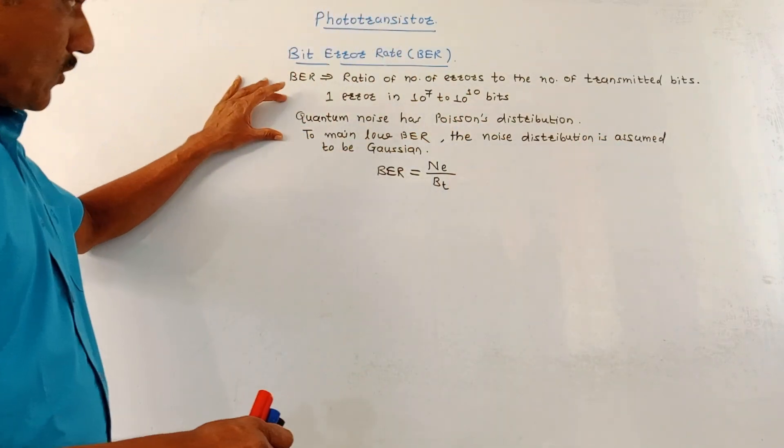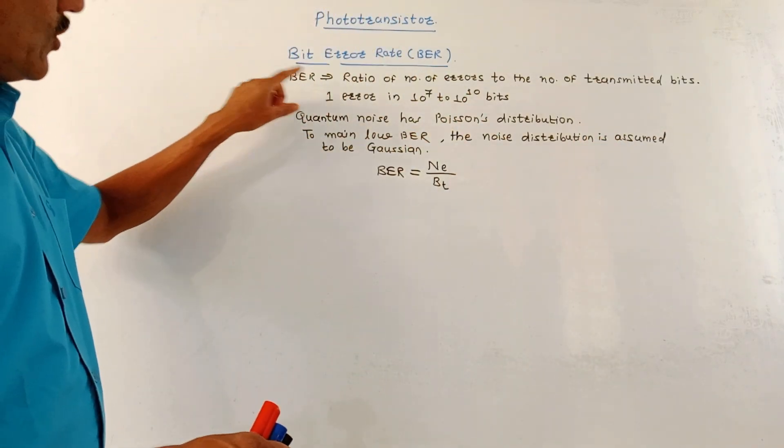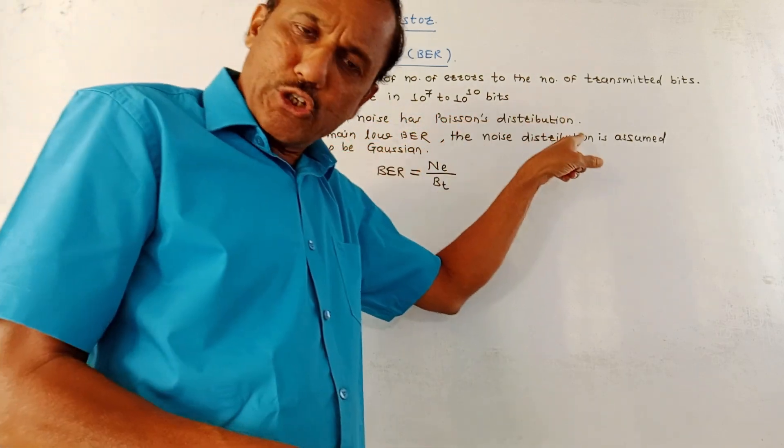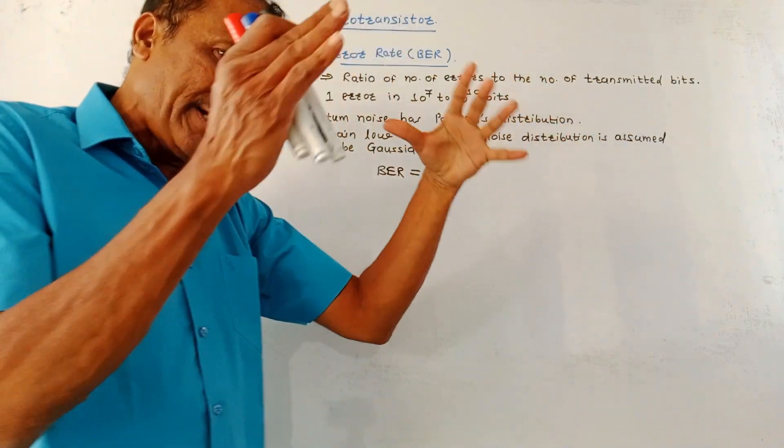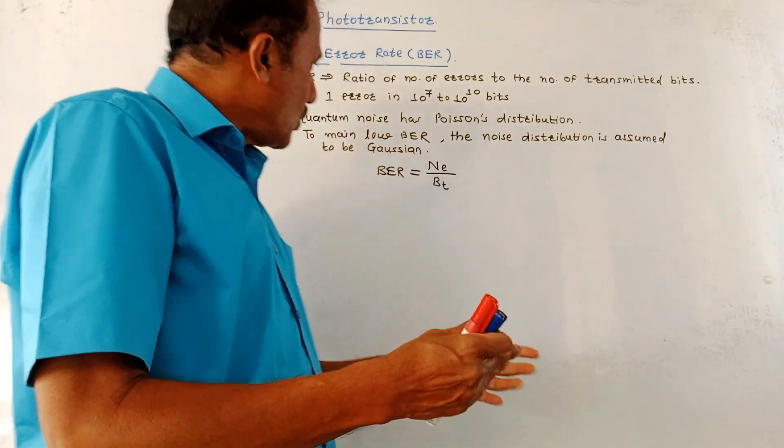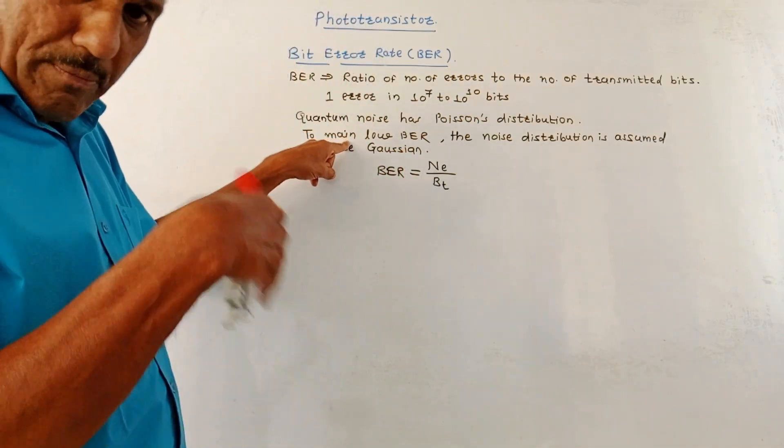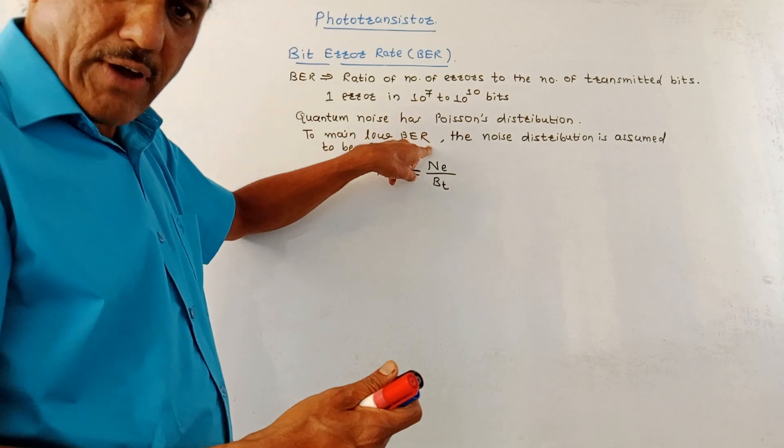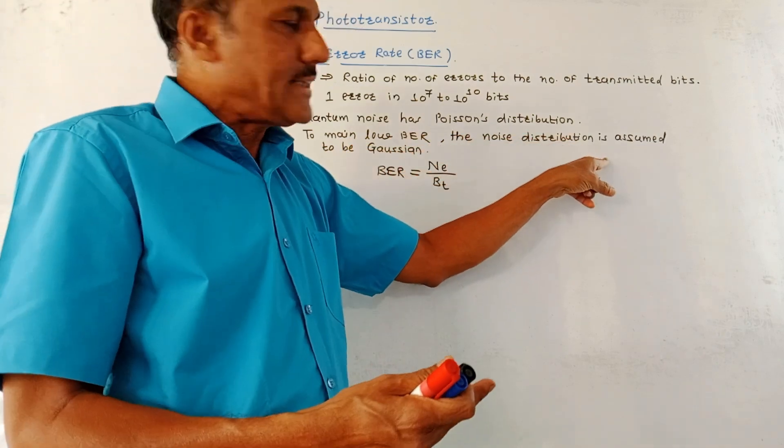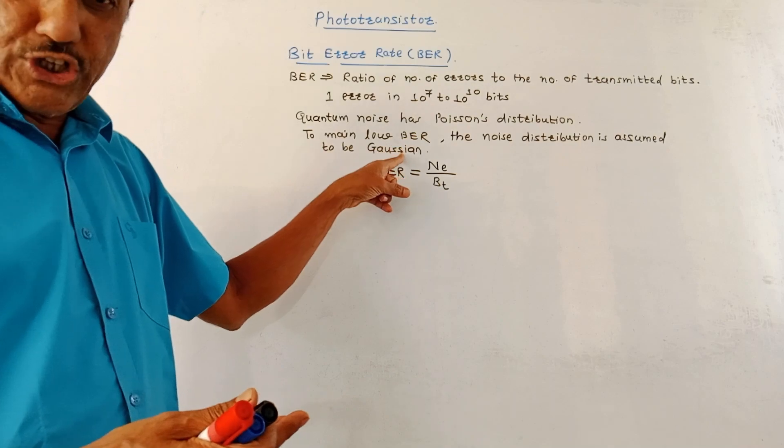Then, in case of optical communication, the quantum noise has the Poisson distribution. But we want to keep this bit error rate minimum. To maintain the lower value of bit error rate, the noise distribution is considered to be a Gaussian one.